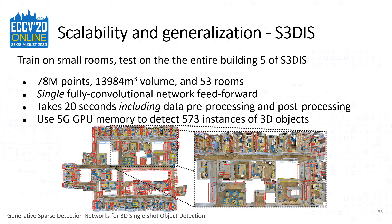We evaluate the scalability and generalization capability of our proposed method on the S3DIS dataset. We train our model on individual small rooms and test it on the entire Building 5 of the S3DIS dataset. Our method processes 78 million points, a 13,000 cubic meter volume, and 53 rooms in a single, fully convolutional neural network forward pass. It takes 20 seconds, including data pre-processing and post-processing, and uses up to 5 GB of GPU memory to detect 573 instances of 3D objects.